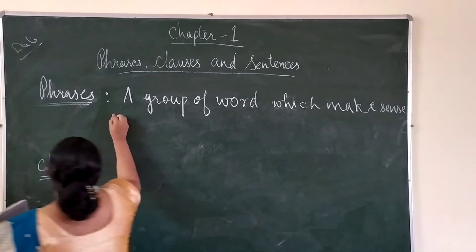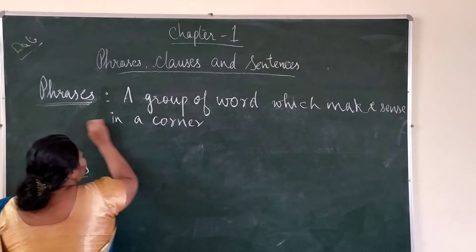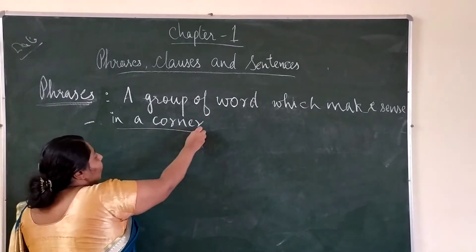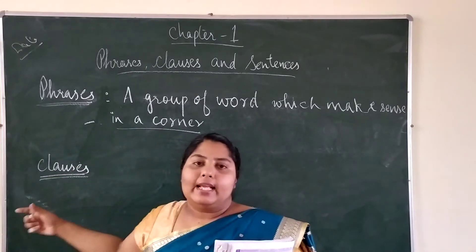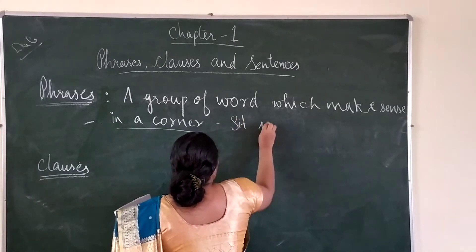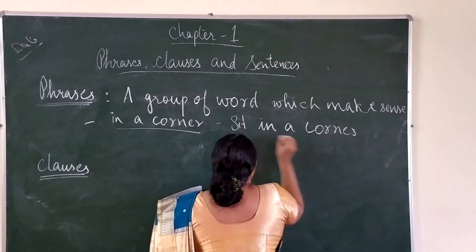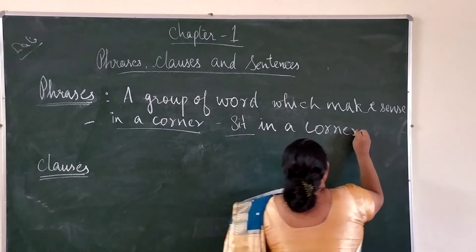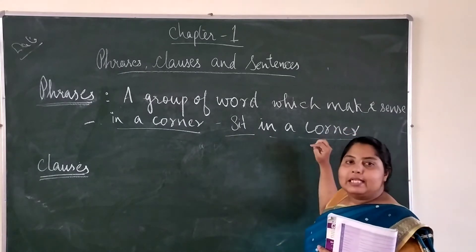For example, 'in a karma.' In a karma is making sense for a sentence, but it's not a complete sentence. We have to write 'sit in a karma.' If we add this, then our phrase — group of words or phrase — will form a sentence.